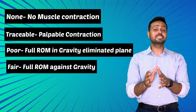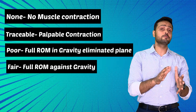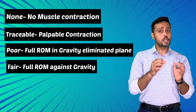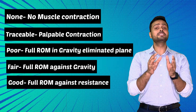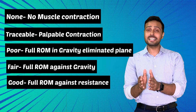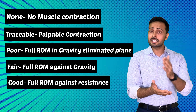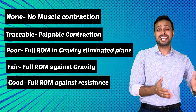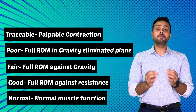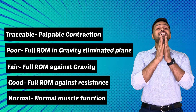In the Kendall scale, fair means there is full range of motion against gravity, good means full range of motion against gravity with resistance, and normal means normal muscle function with maximum resistance and full range of motion.